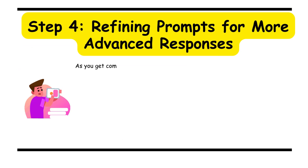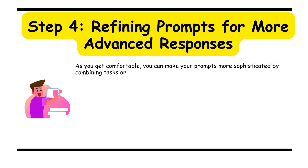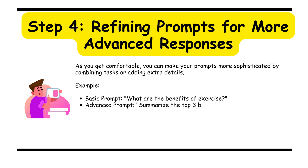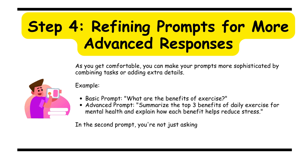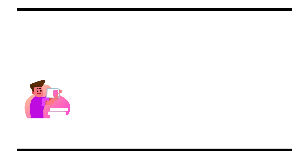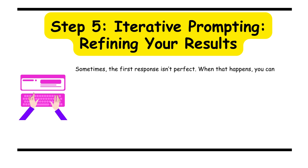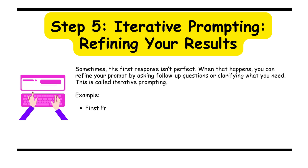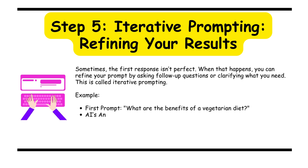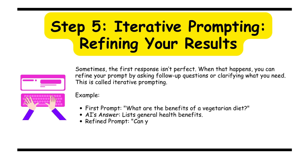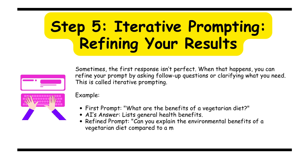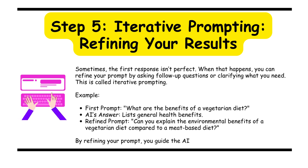Step 4: refining prompts for more advanced responses. As you get comfortable, you can make your prompts more sophisticated by combining tasks or adding extra details. For example, a basic prompt might be 'What are the benefits of exercise?' while an advanced prompt would be 'Summarize the top three benefits of daily exercise for mental health and explain how each benefit helps reduce stress.' In the second prompt, you're asking for a specific focus — mental health — and a deeper explanation of each point. Step 5: iterative prompting — refining your results. Sometimes the first response is imperfect. When that happens, you can refine your prompt by asking follow-up questions or clarifying what you need. This is called iterative prompting. For example, a first prompt might be 'What are the benefits of a vegetarian diet?' and after getting general health benefits, a refined prompt would be 'Can you explain the environmental benefits of a vegetarian diet compared to a meat-based diet?' By refining your prompt, you guide the AI toward a more specific answer.